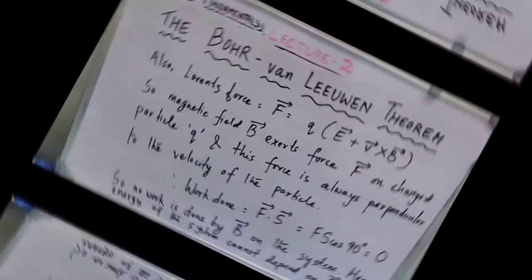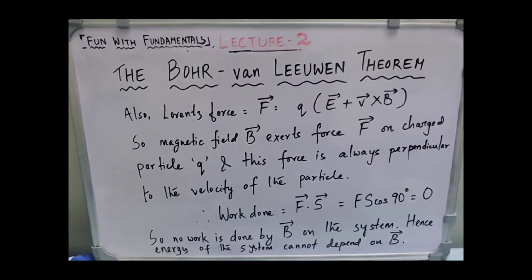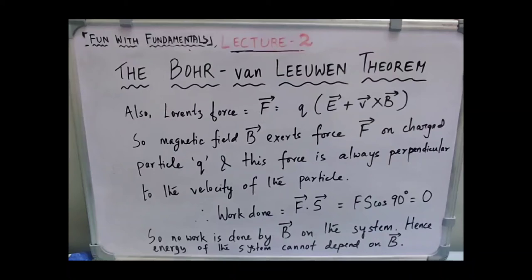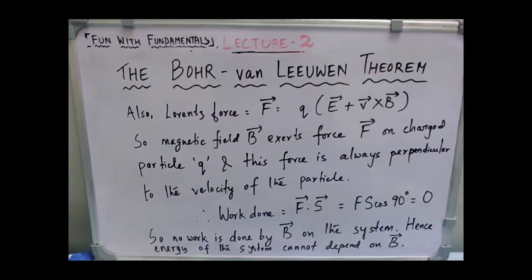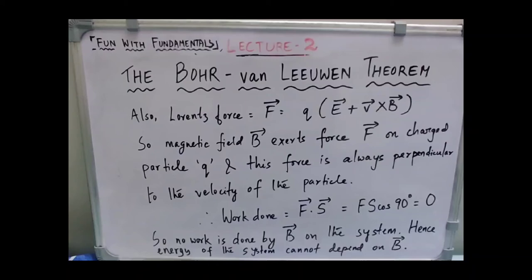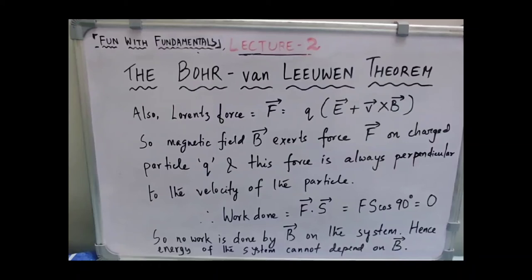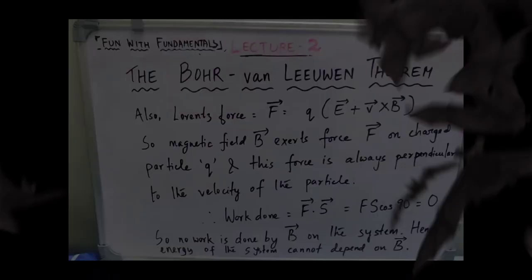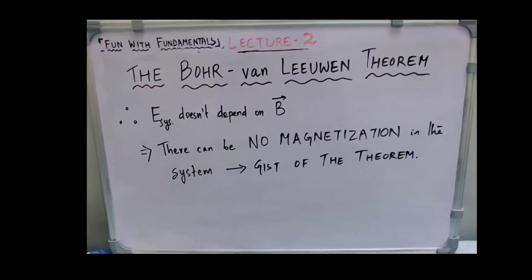Consider the Lorentz force F acting on a charged particle q in a magnetic field B: F equals q(E plus v cross B). The magnetic field will always exert a force perpendicular to the velocity of the charged particle. Since work done equals force times displacement, and here the force and displacement are perpendicular to each other, the work done by the magnetic field on the charged particle will be zero. Hence the magnetization and the energy of the system cannot depend on the magnetic field — contradicting what we proved earlier. Therefore, the energy of the system does not depend on the magnetic field and there can be no magnetization.